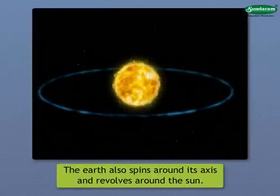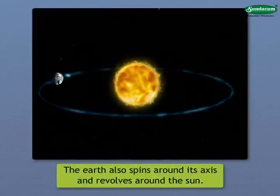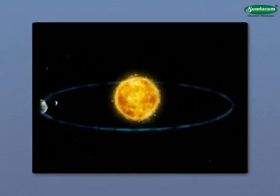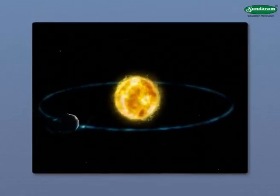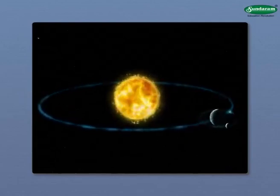The Earth also spins around its axis and revolves around the Sun. As a result, though the Moon does not revolve around the Sun independently, it indirectly keeps revolving around the Sun.